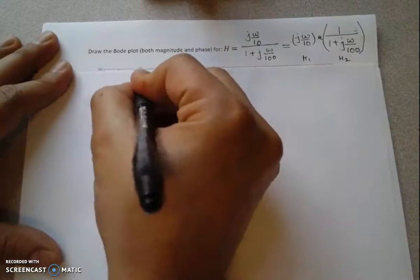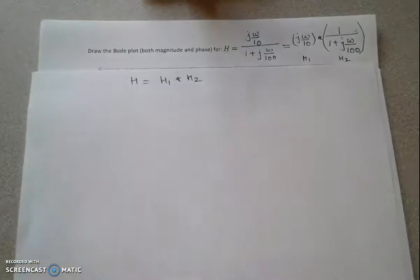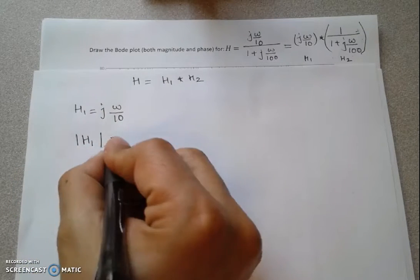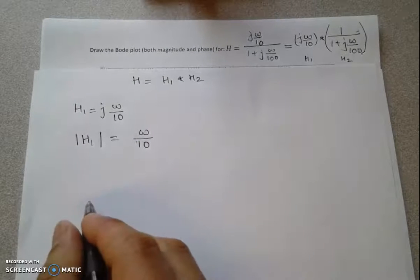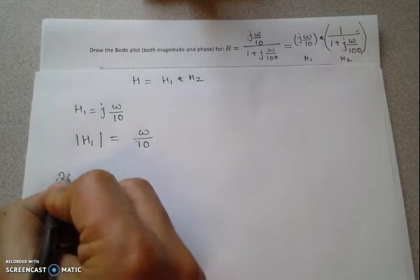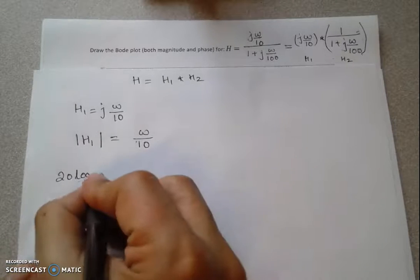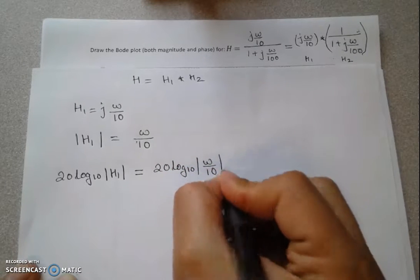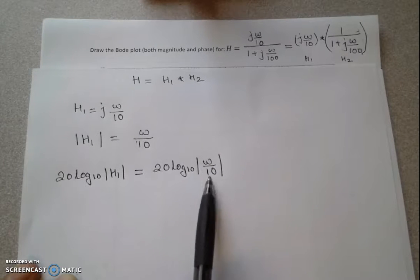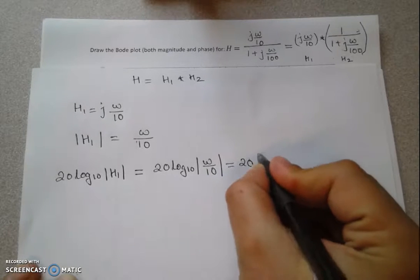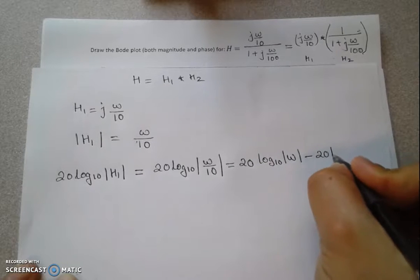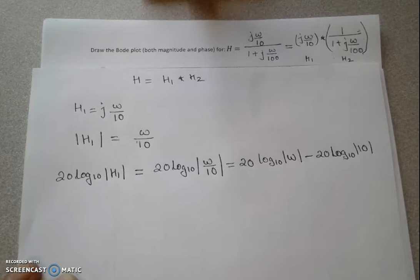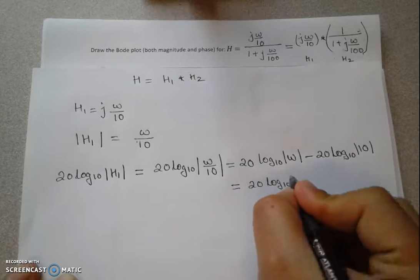So H equals H1 times H2, where H1 is j-omega over 10. The magnitude of H1 is simply omega over 10. Taking 20 log base 10 of the magnitude — which is what a Bode magnitude plot is — we get 20 log base 10 of omega minus 20 log base 10 of 10. Since log base 10 of 10 is 1, this simplifies to 20 log base 10 of omega minus 20.